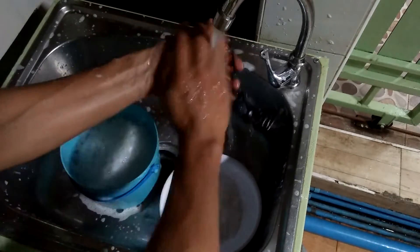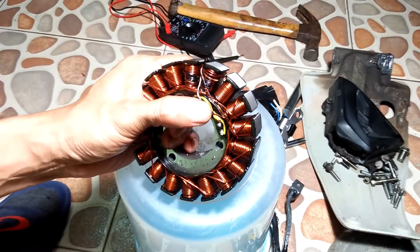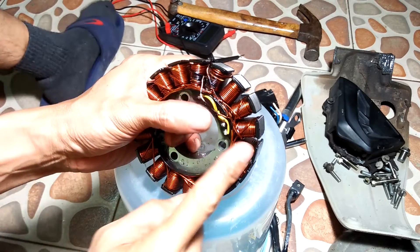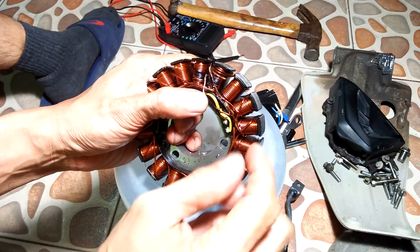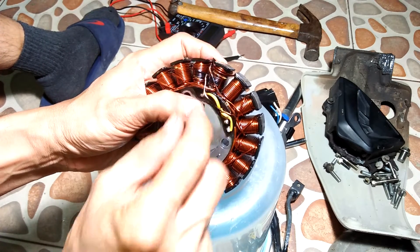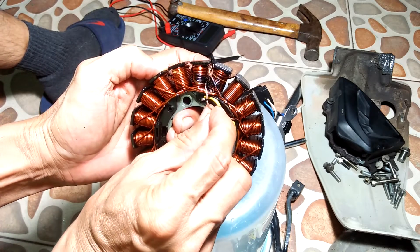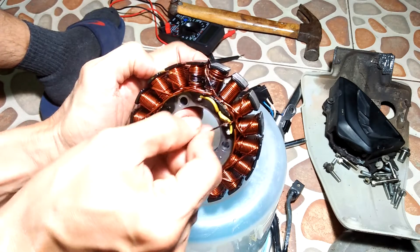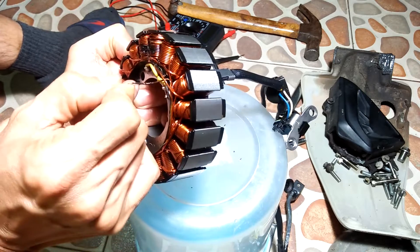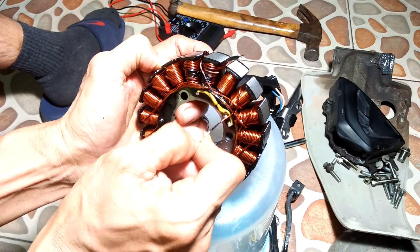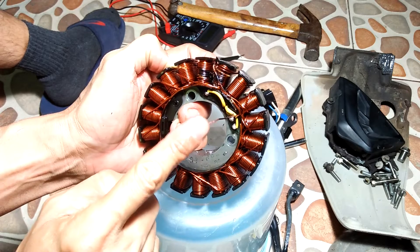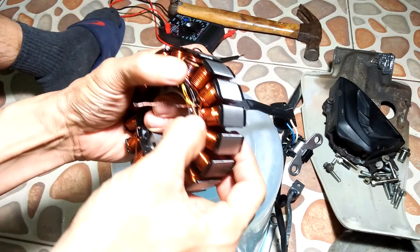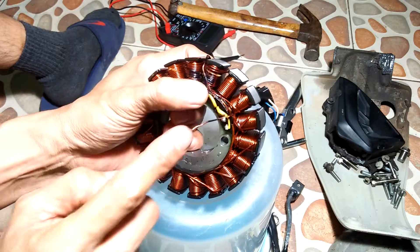Now the reason why I decided to rewind only the two affected poles is because all the other windings look good. The burnt out windings are near the main connection terminals so they effectively shorted out the three-phase output of the stator. That is the reason why this stator is not giving out a decent AC voltage output.